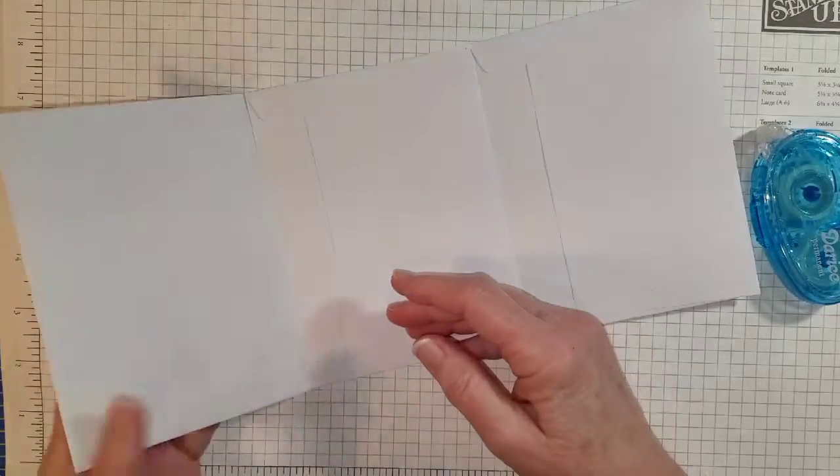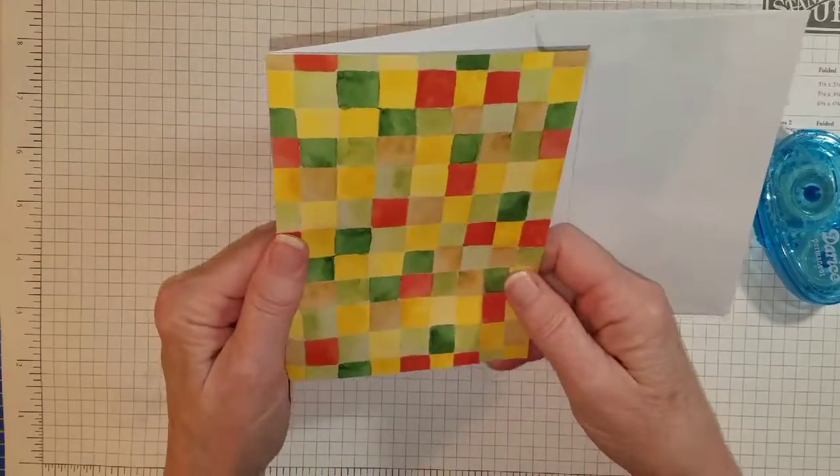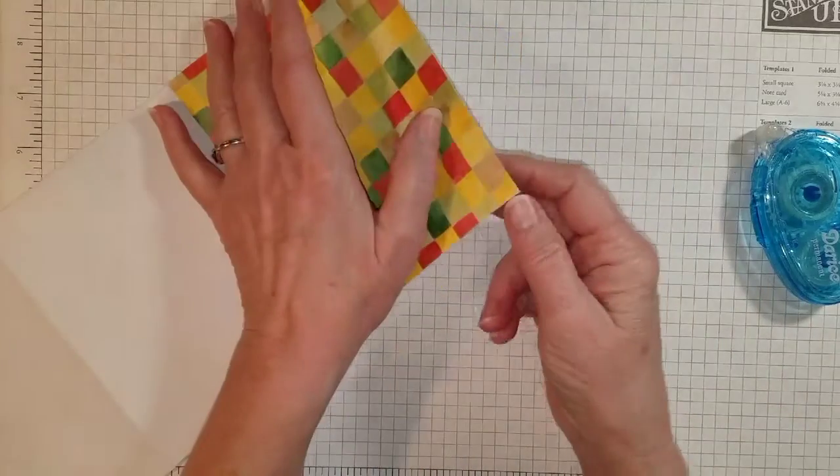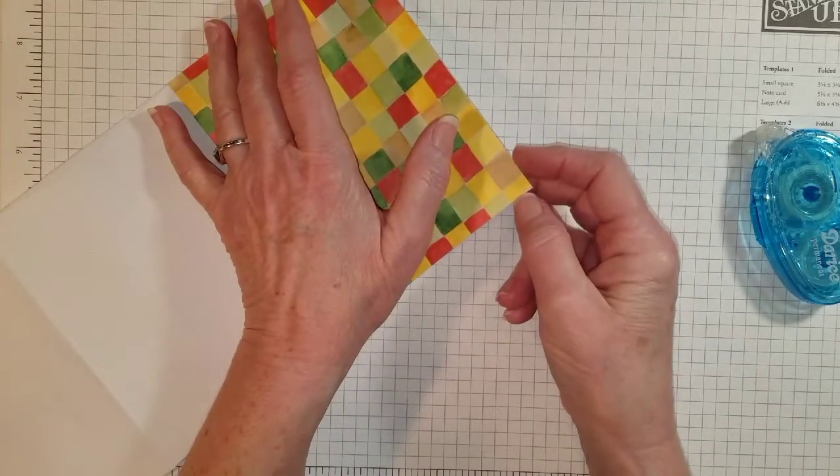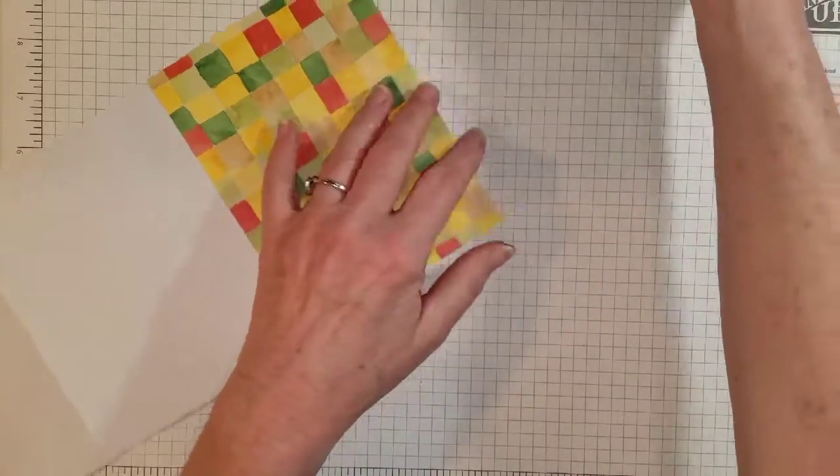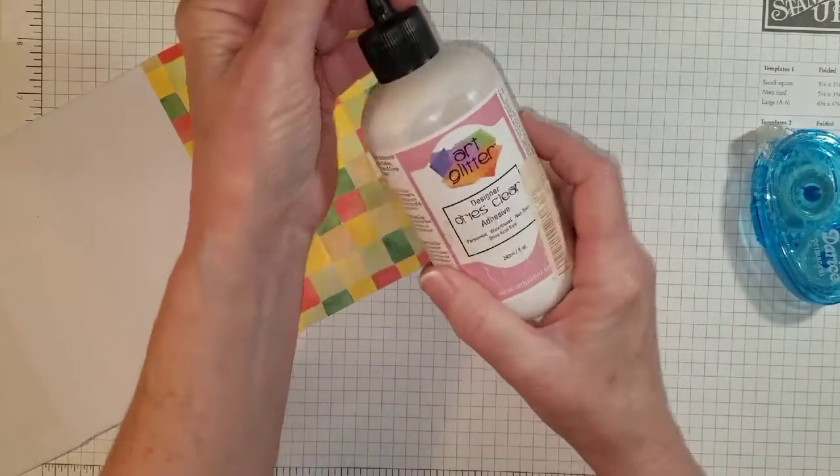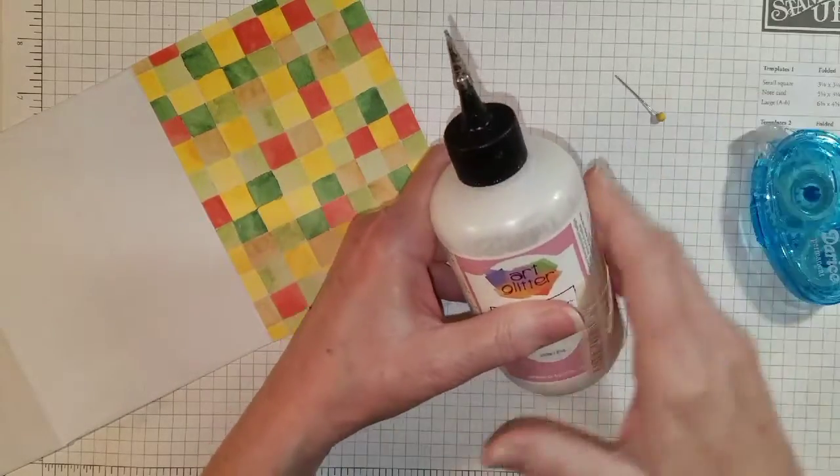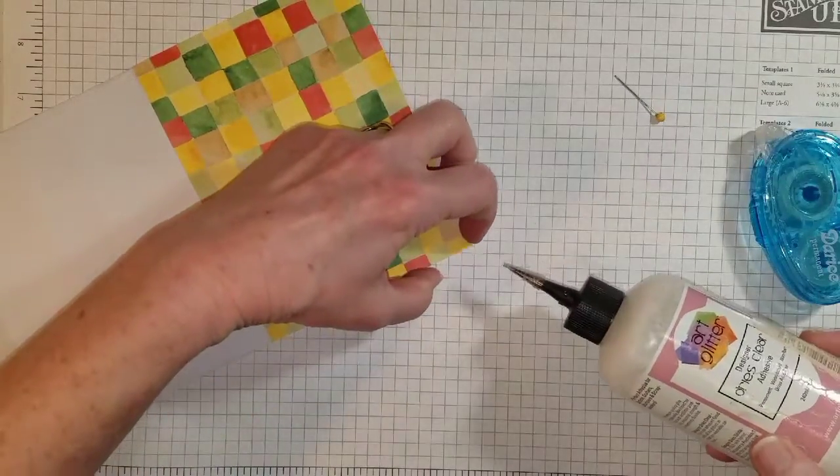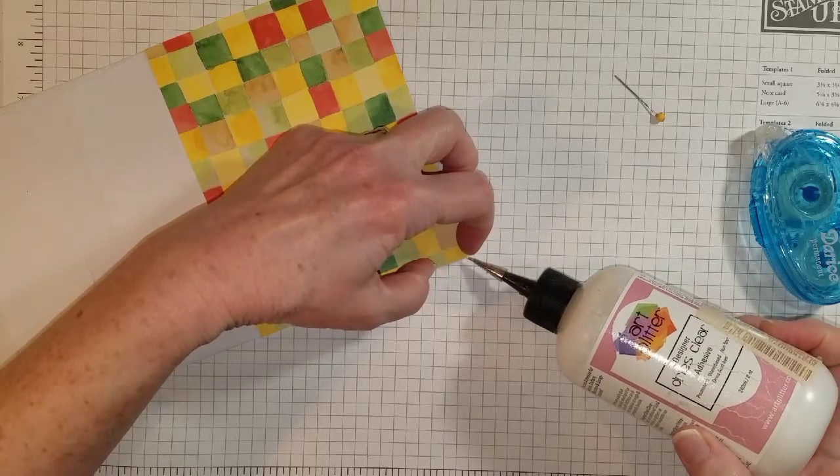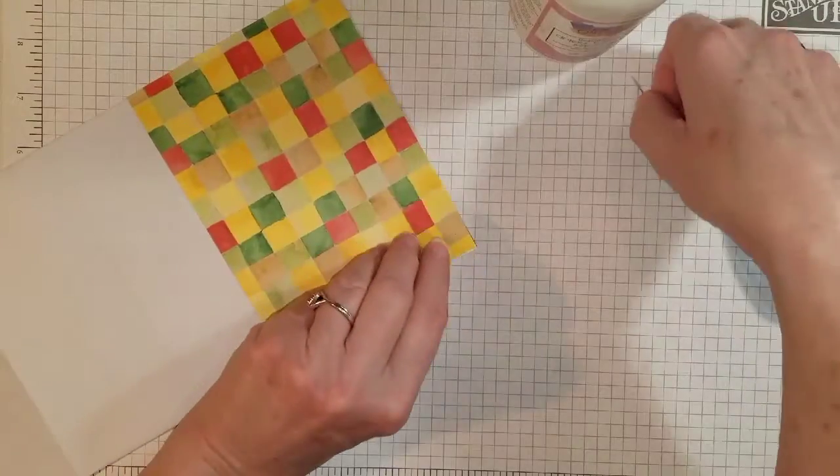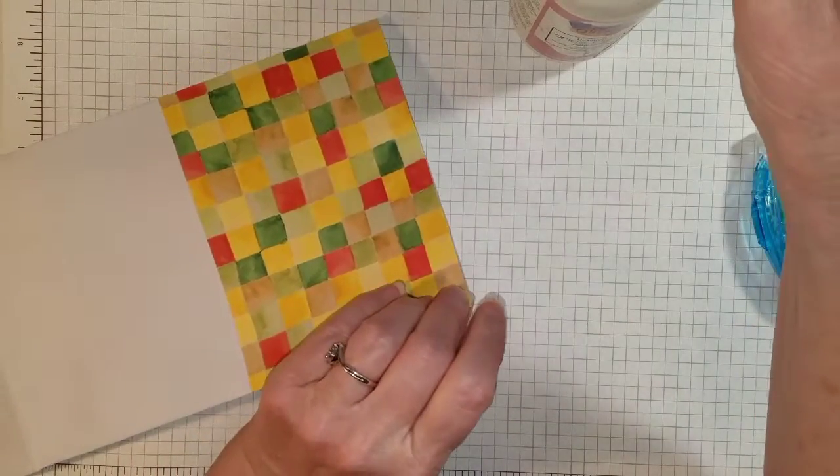Here's one part of the back that's covered, and I see a little bit here that didn't stick down very well. So I'll just take some of this art glitter glue. This is really great quick drying glue and it dries clear. I'm just going to put a little bit of that in there.